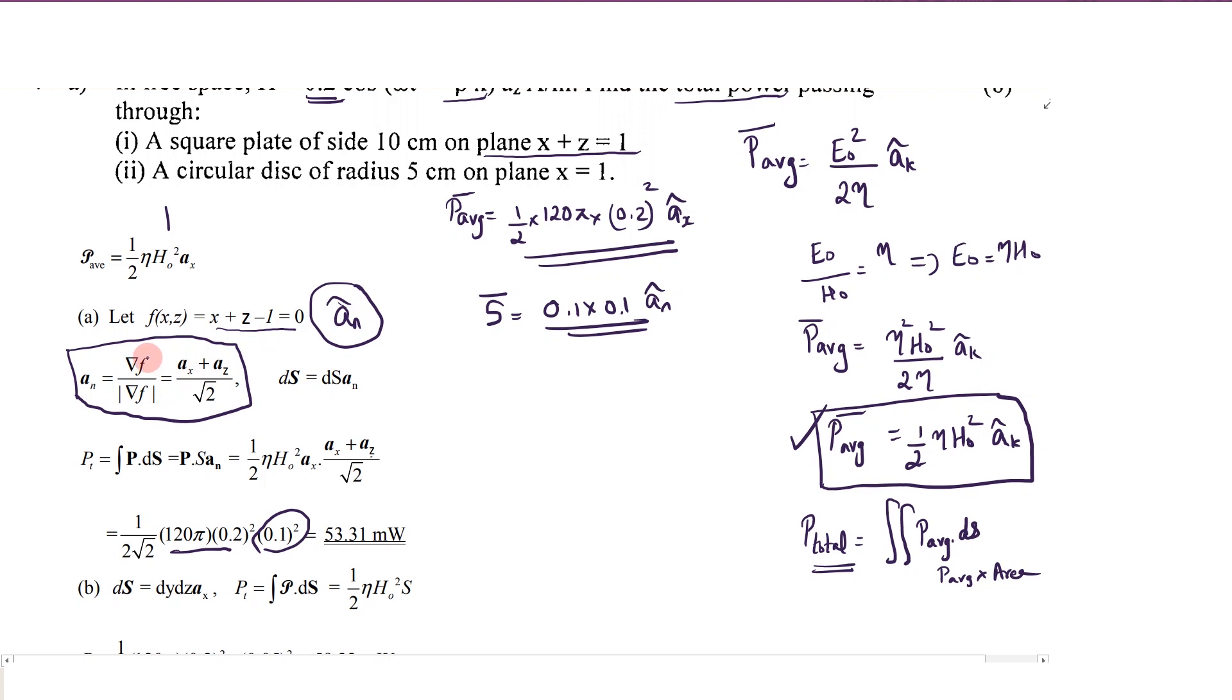How to calculate an, the unit vector normal to the plane given by the equation x plus z minus 1 equals 0? The equation is del f divided by modulus of del f. Del f means unit vector x into del f by del x plus ay into del f by del y plus az into del f by del z. Here applying x and z, these two terms are there. When you take the derivative for x and z, 1 is the value, so it is ax plus az divided by modulus of that gradient, that is square root of 1 plus 1, that is square root of 2.